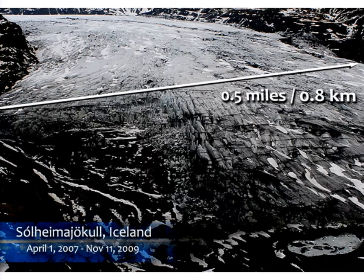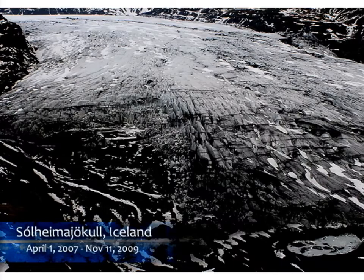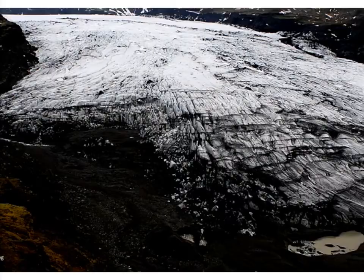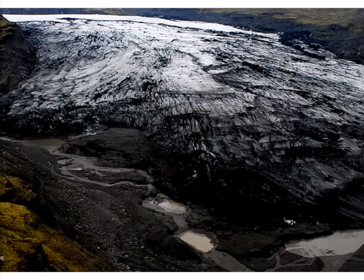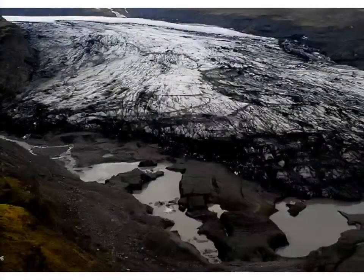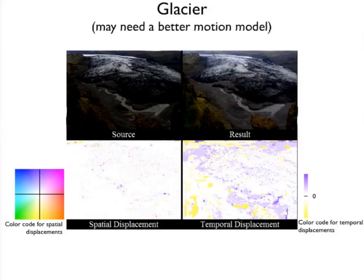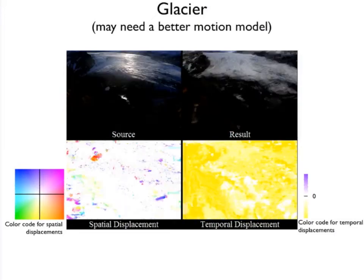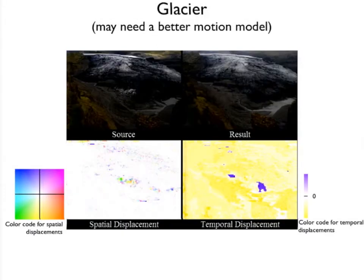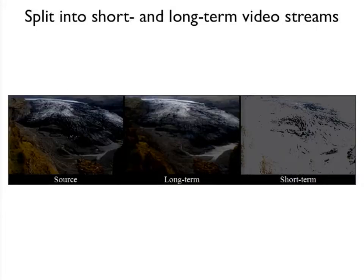There's time-lapse data from the Extreme Ice Survey, which documents climate change through time-lapse imagery of glaciers. Their input video has many short-term fluctuations you're not interested in — you'd rather have long-term changes emphasized. We asked for their permission to process the video, and the top right shows our processed output. Separating out into short- and long-term components shows what we're removing in the processed time-lapse.